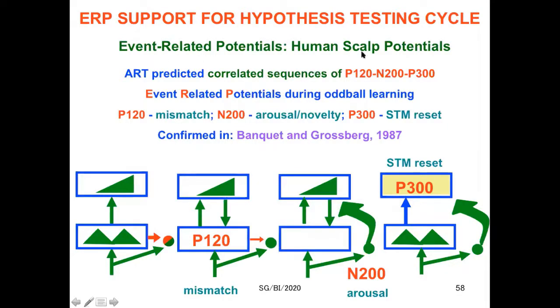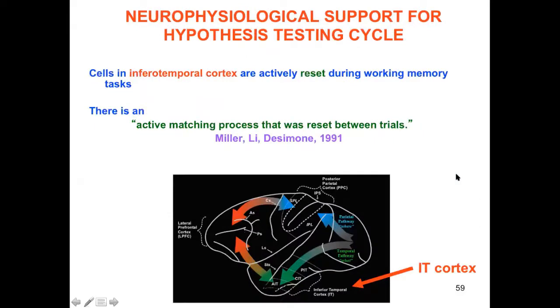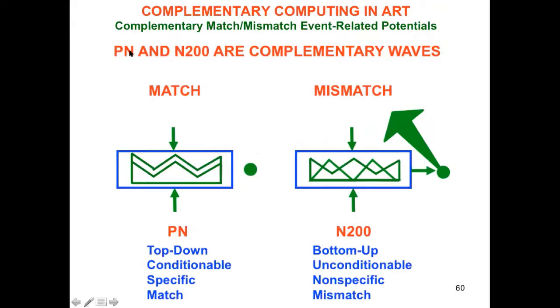There's a lot of support for this hypothesis testing cycle. For example, from human scalp potentials with Jean-Paul Banquet in the 80s, we showed that you get sequences of P120, N200, and P300 in mismatch events where these correspond to a mismatch triggering non-specific arousal and reset of the category that's currently coded. For a long time also, starting with Bob Desimone's lab, it showed that there is an active matching process that's reset between trials, and this was recorded physiologically in inferotemporal cortex where categories are learned. It's also known that processing negativity, which is due to top-down matching, and the M200, which is due to reset and mismatch, have complementary properties: top-down versus bottom-up, conditionable versus unconditionable, specific versus non-specific, match versus mismatch. This beautiful complementary computing in adaptive resonance theory.